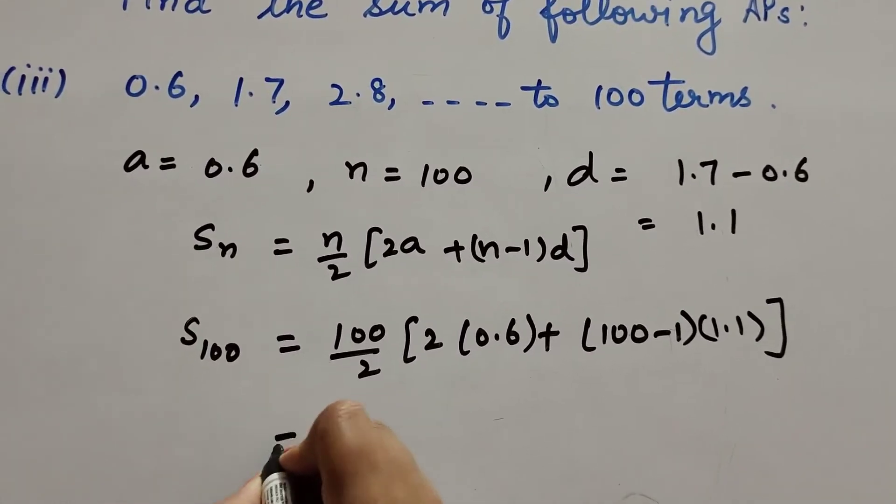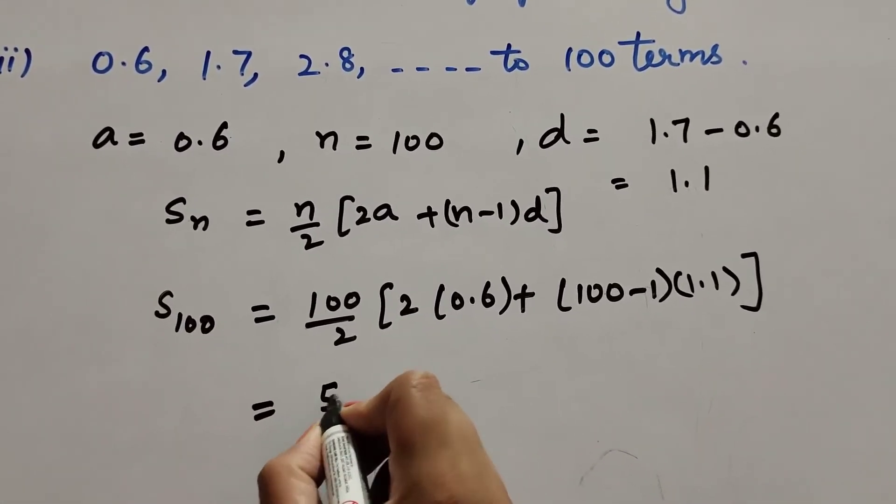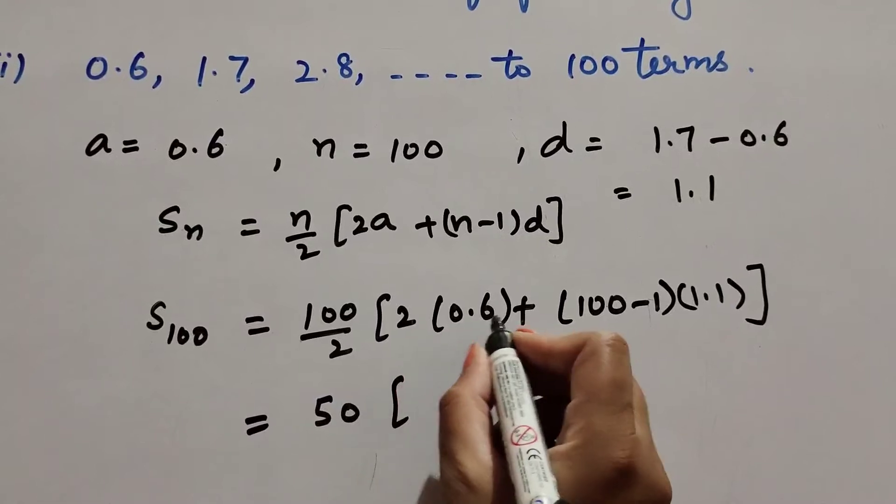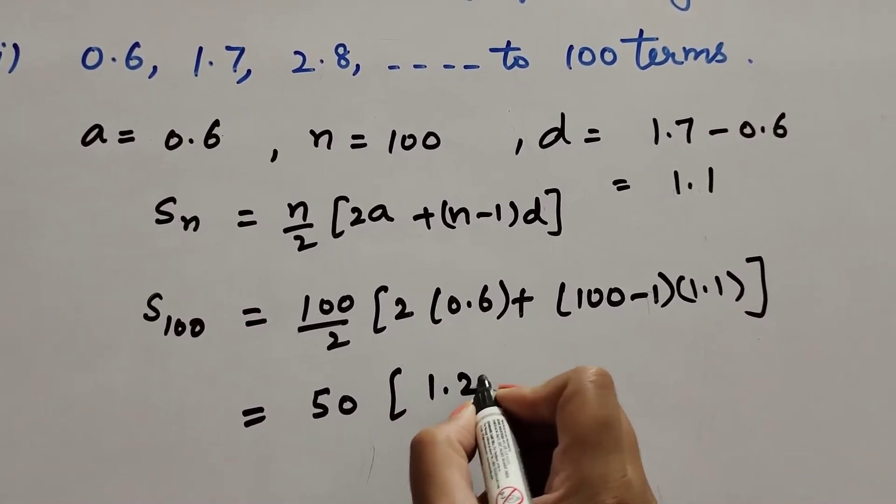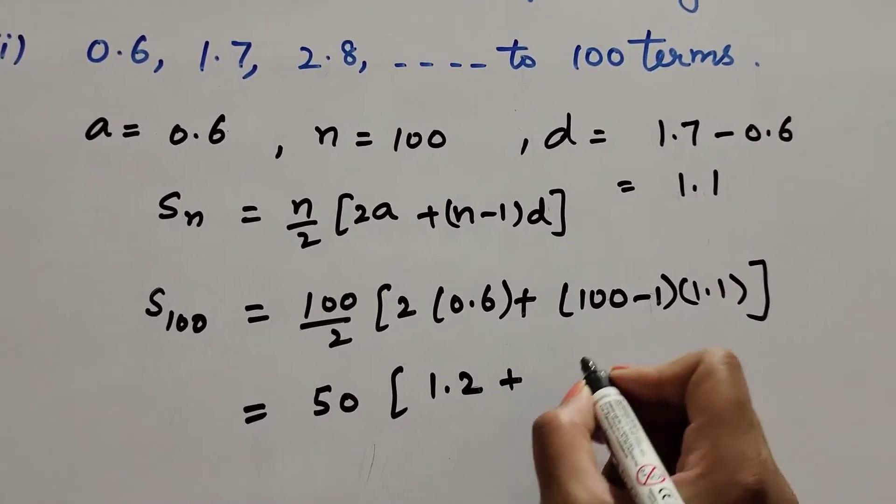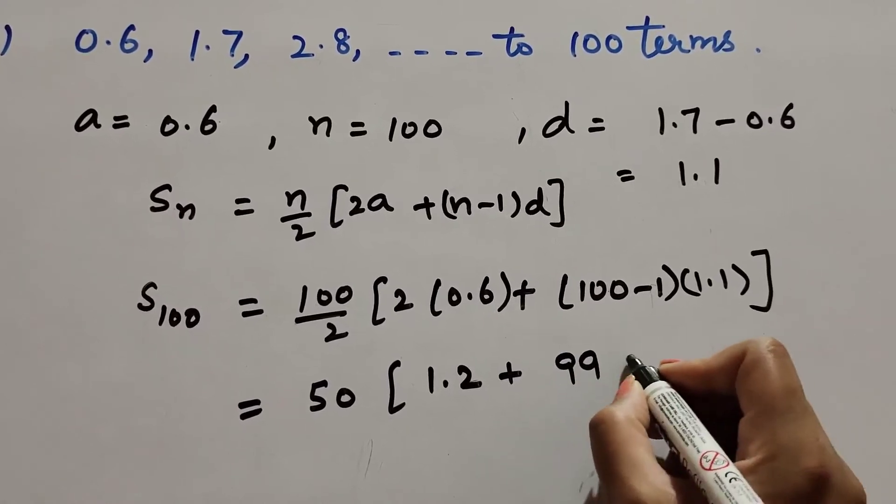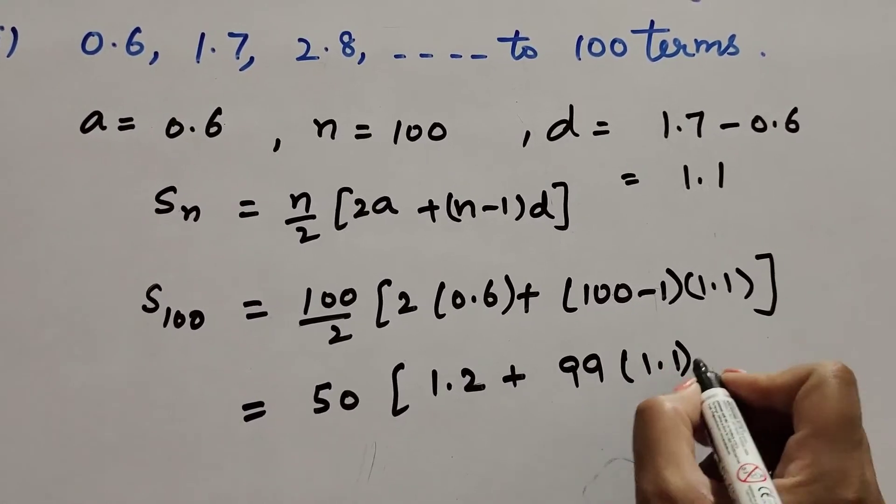It is equal to 100 divided by 2, we get answer 50 into 2 multiplied by 0.6, which is 1.2, plus 100 minus 1 is 99, 99 multiplied by 1.1.